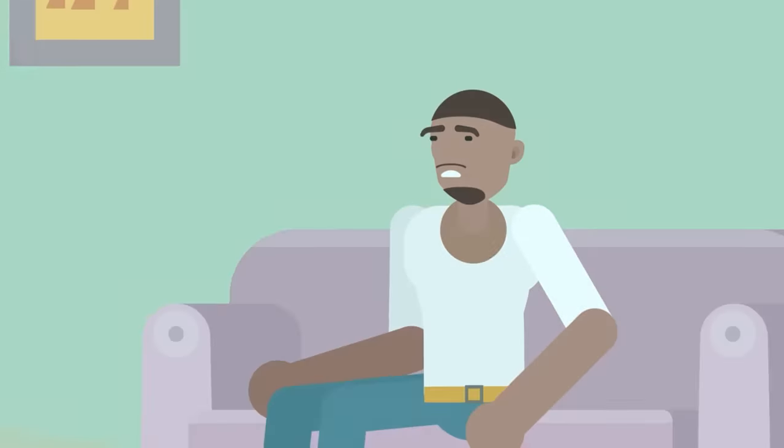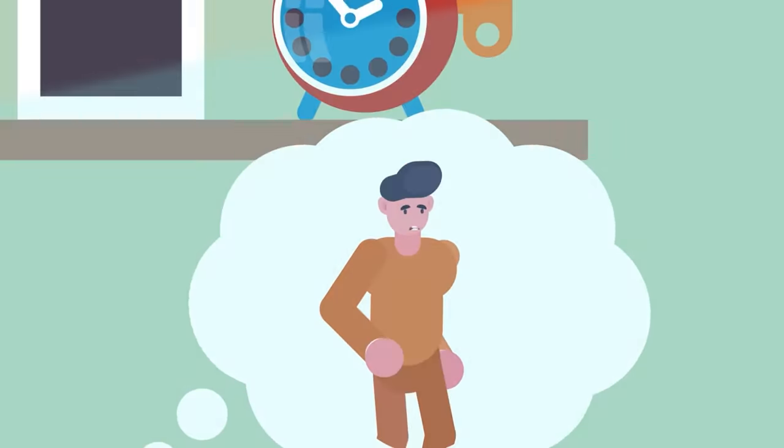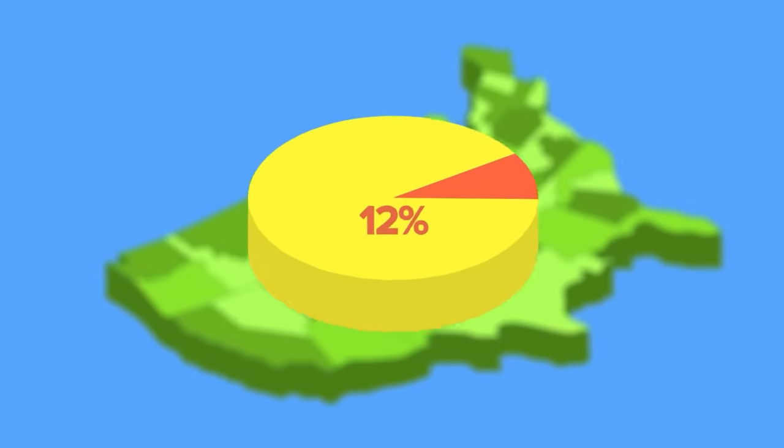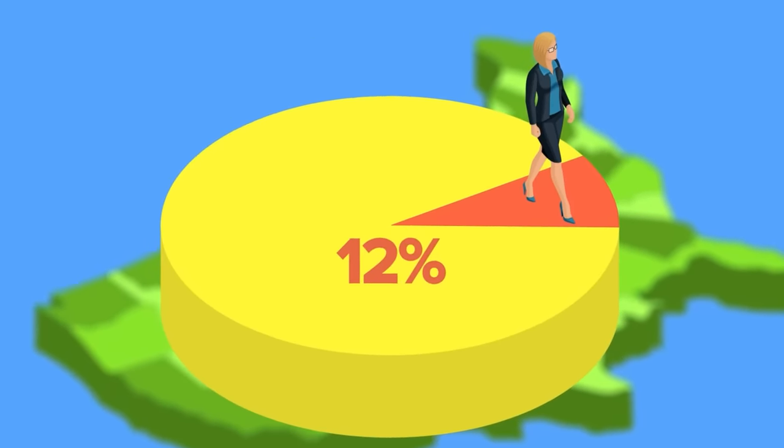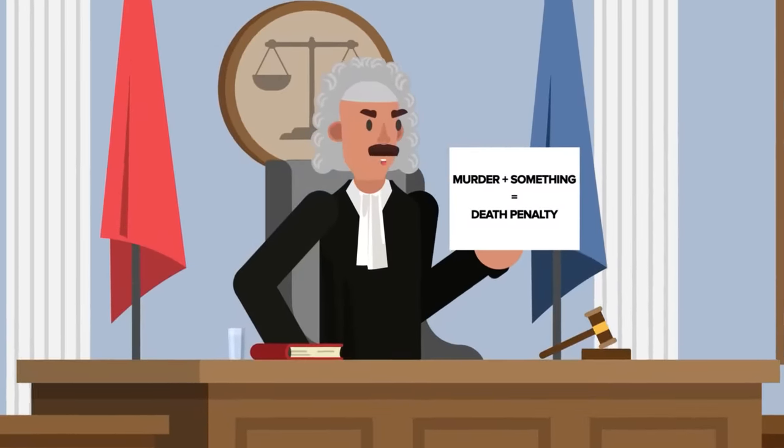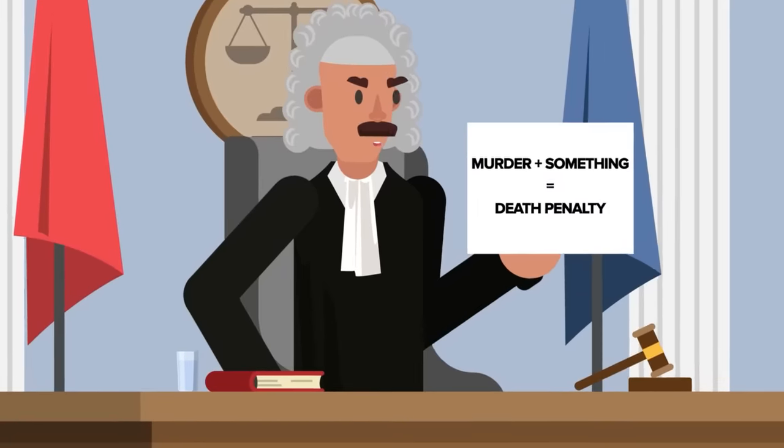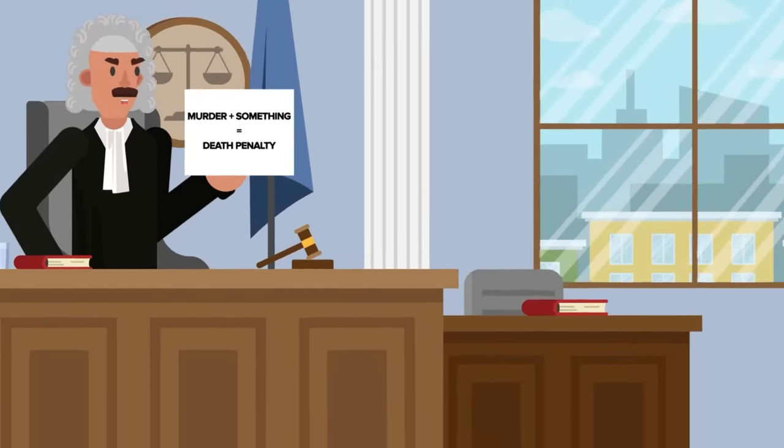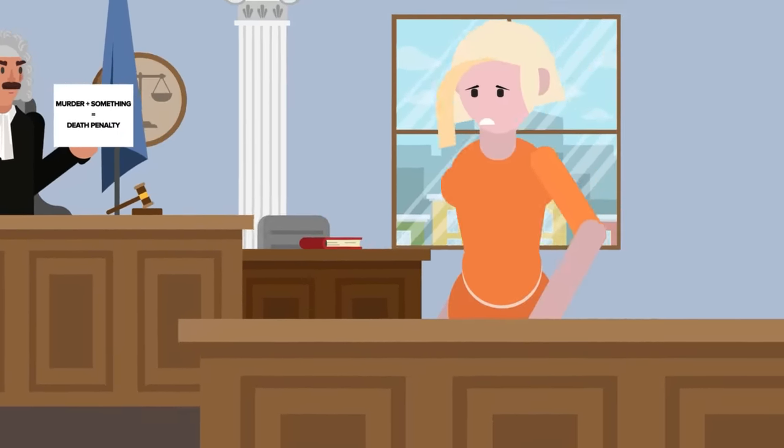We don't often think about women who are on death row, and that's for a good reason. On average, around 12% of all murders in the United States are committed by females. And since murder, in conjunction with other offenses, is normally what gets someone the death penalty, there are just not as many females on death row as males.